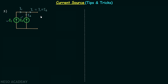Therefore, if we have a single source instead of these two sources, that source will provide the current I1 plus I2 in this direction. This single-source model is the equivalent model of this parallel arrangement.